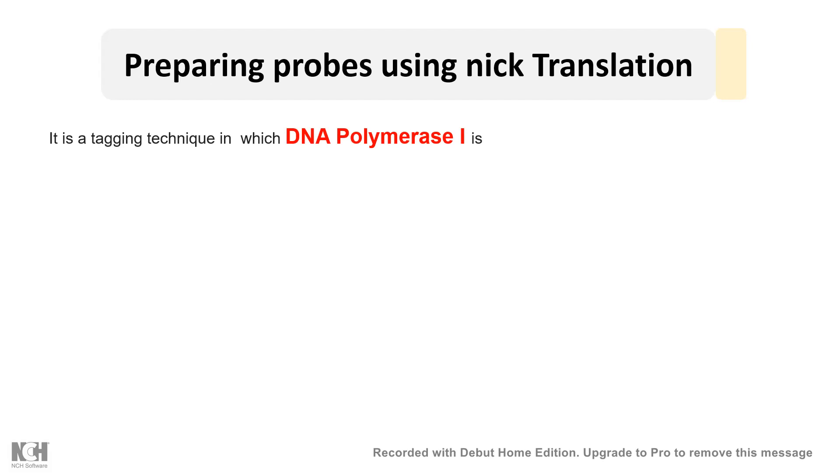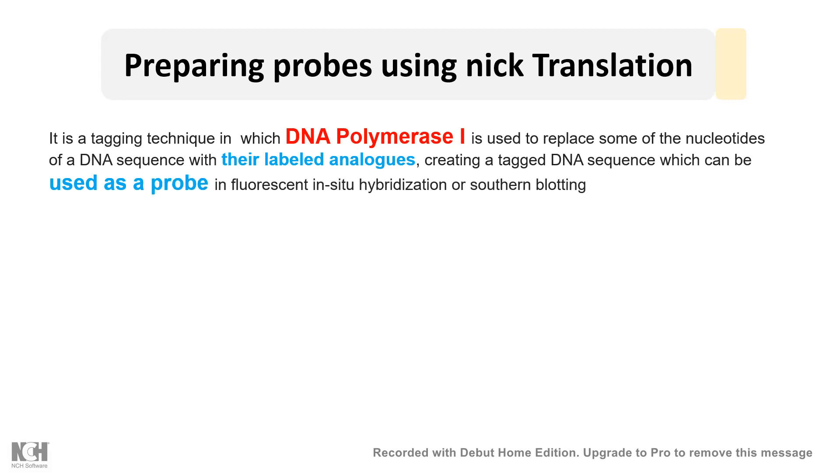Nick translation is a technique which uses DNA polymerase one to label a specific sequence of the DNA, either fluorescently or radioactively.